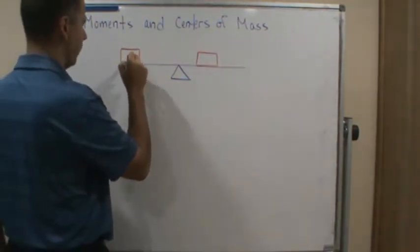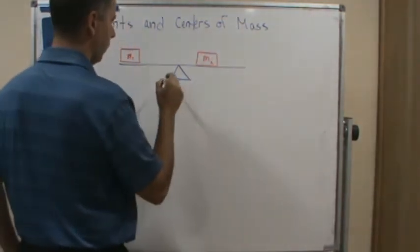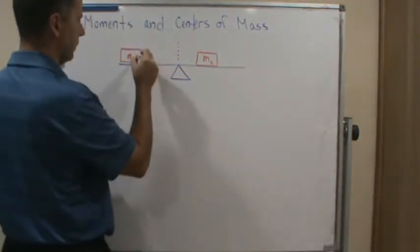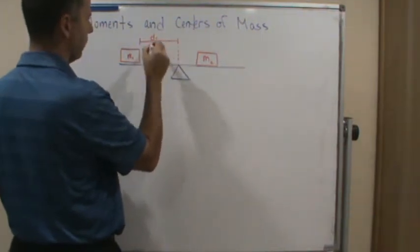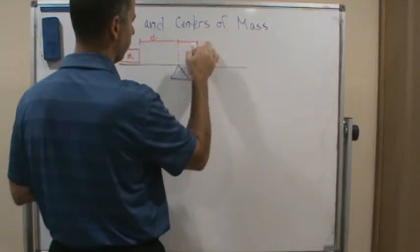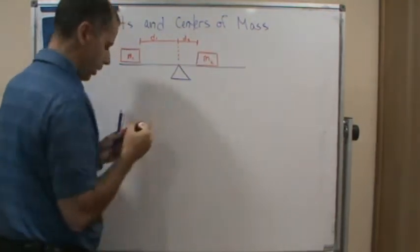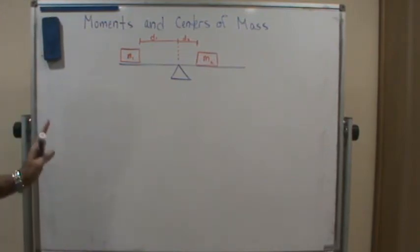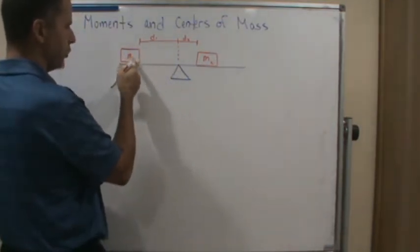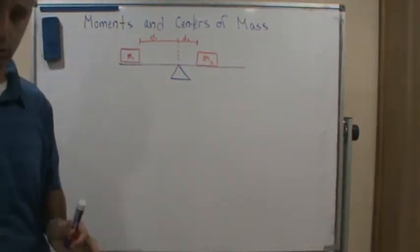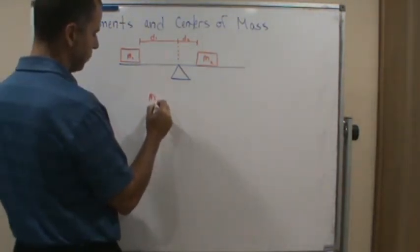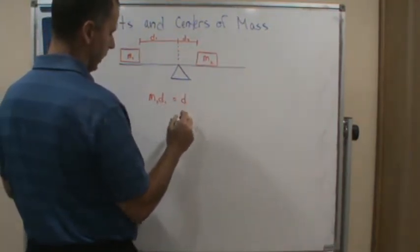Let's call the two masses m1 and m2, with distances d1 and d2 from the fulcrum. The balancing point occurs when m1 times d1 equals m2 times d2 — that's the condition for balance.